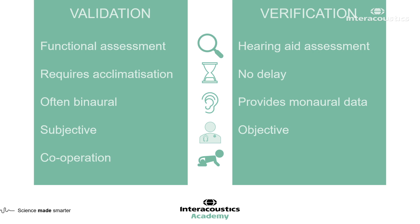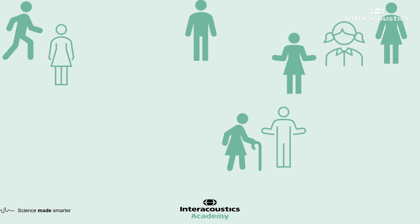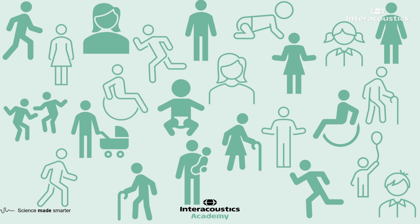Real ear measurements provide objectivity and require minimal cooperation, even in young infants, children, or patients who are not able to sit still for full real ear measurements — we have the option of coupler measurements. So why does verification matter? We have huge variations between people: differences in ages, genders, sizes, and hearing losses. Our real ear measurements and our verification process allows us to overcome that.